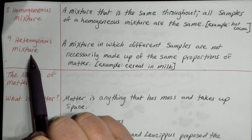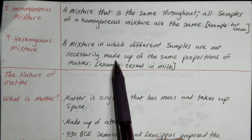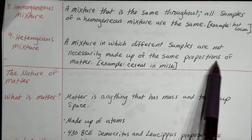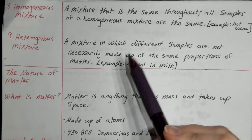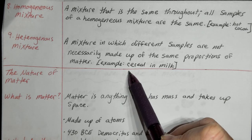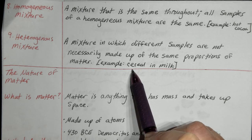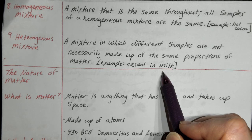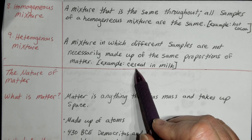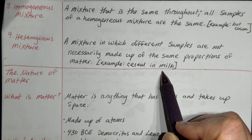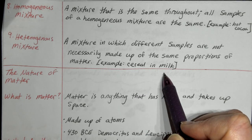Number nine, heterogeneous mixture — a mixture in which different samples are not necessarily made up of the same proportions of matter. An example would be cereal in milk: the milk is a liquid, the cereal is a solid, you have a solid inside a liquid. You can clearly see the Frosted Flakes in the milk — that is totally a heterogeneous mixture.